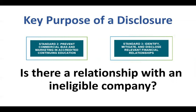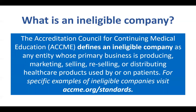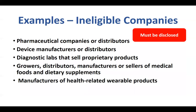So let's define what an ineligible company is. Here is the formal definition, and this can be found on all the disclosure forms. Essentially, it is a company that sells or uses a product on a patient. Examples of ineligible companies that must be disclosed on the disclosure form include pharmaceutical and device companies, labs that sell products, vitamins and distributors of foods and dietary supplements, as well as manufacturers of health-related wearable products and apps.